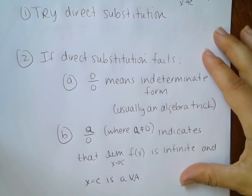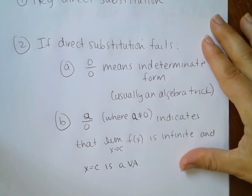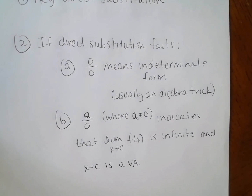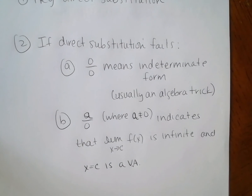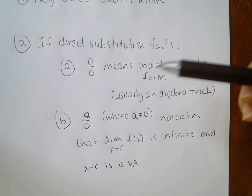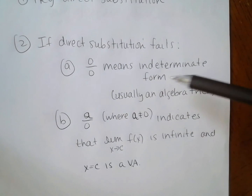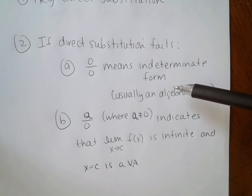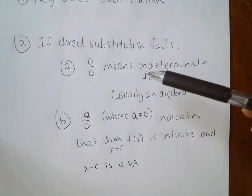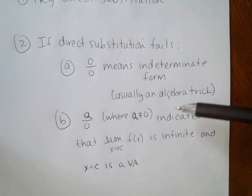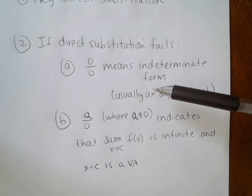If direct substitution fails, there are a couple of cases. Sometimes I get zero in both the numerator and denominator, but these are different cases. If I get zero over zero, then that's what we call indeterminate form — that actually is not zero. That means there's more algebra to be done; there's usually an algebra trick, and that's what we're going to talk about next.